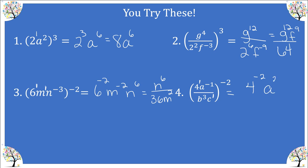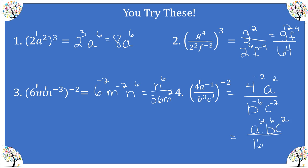So we have four to the negative two, times a to the positive two — because a negative times a negative is positive — then b to the negative six and c to the negative two. The only factor that does not need to be moved is a squared. Four to the negative two moves to the denominator becoming positive 16 since it's four times four. A squared stays where it is. Both b to the negative six and c to the negative two are negative so they move to the top. That's our final answer.